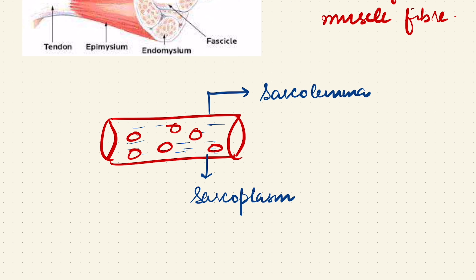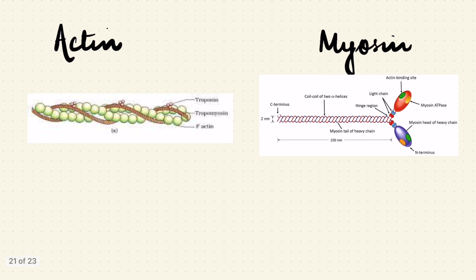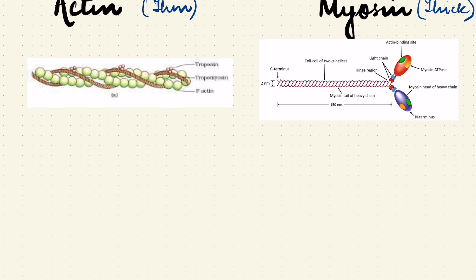Present within the muscle fiber are the proteins actin and myosin, which are called myofilaments. It is the interaction of actin and myosin that brings about muscle contraction. Actin is the thin filament, whereas myosin is the thick filament. Actin is made up of two filamentous actins (F-actins) that are helically wound upon each other in a helical fashion, just like the structure of DNA.